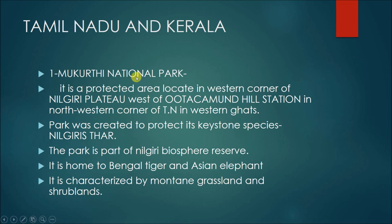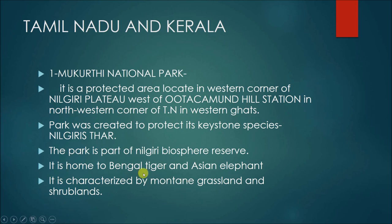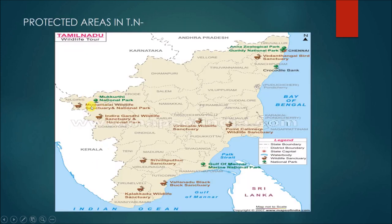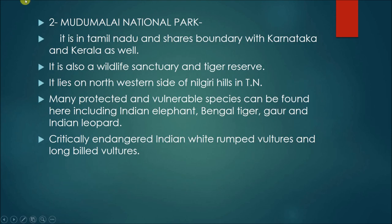Mukurti National Park is a part of the Nilgiri Biosphere Reserve. The Nilgiri tahr is the key species related to Mukurti National Park, and it is found in the Ooty hill station and Nilgiri plateau. These are the key terms used to create MCQs in competitive examinations. The vegetation present there is mountain grassland and shrublands. Remember the location — which hills it is situated in.